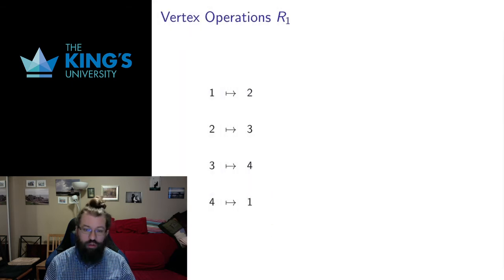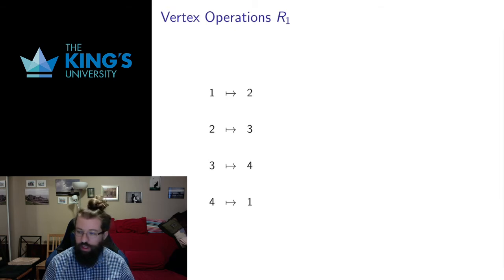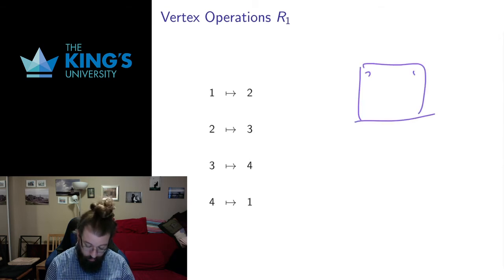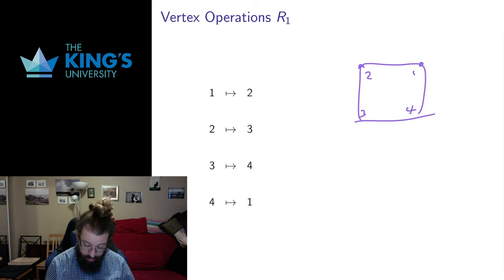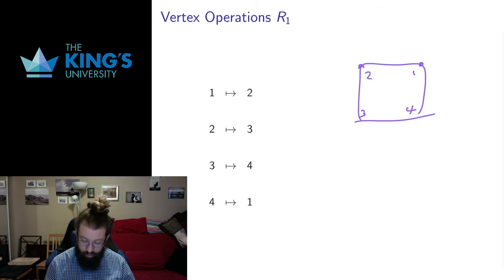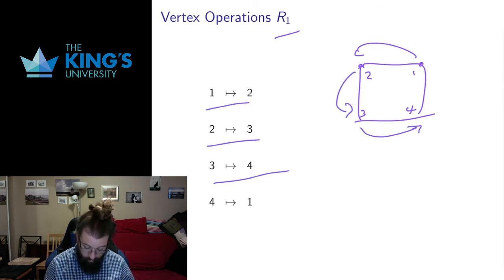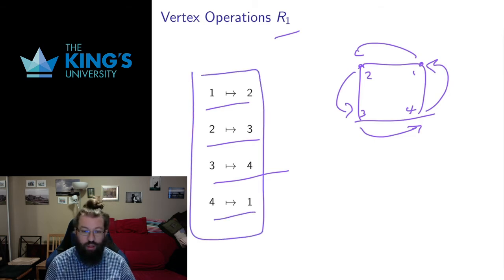How do I actually calculate this? I could express everything as matrices and do matrix multiplication, but there's a nicer way for dihedral groups called vertex operations. If I have my square with vertices 1, 2, 3, 4 — if I know where the vertices go, I know everything, because the transformation is linear and preserves lines. So what does R1 do? R1 is a rotation by a quarter turn counterclockwise: vertex 1 goes to 2, 2 goes to 3, 3 goes to 4, and 4 goes to 1. I can write that as a set of vertex transformations.